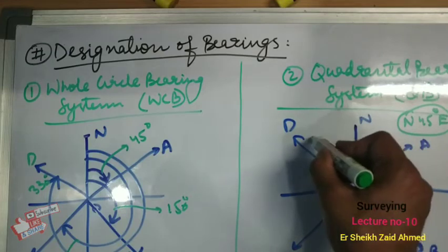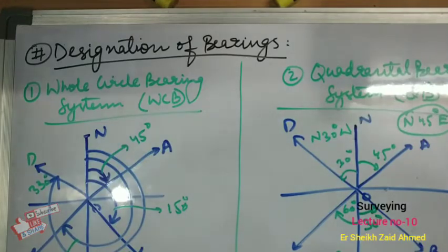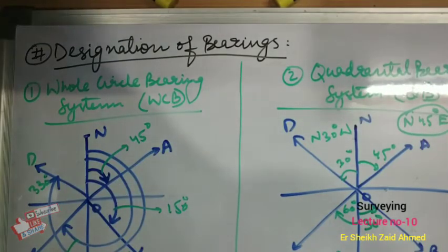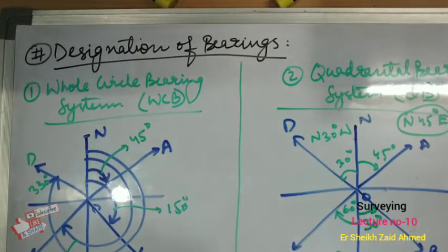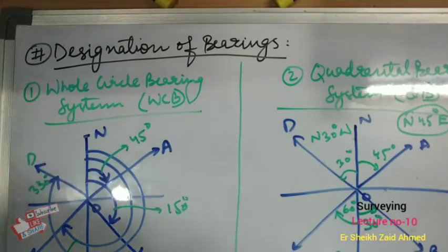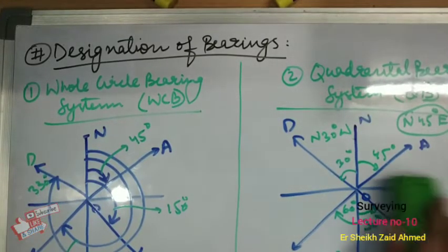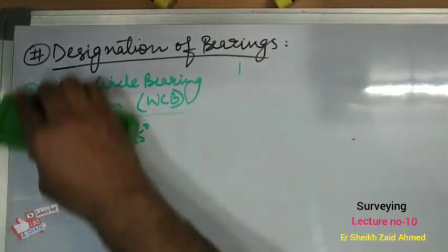So this is all about the designation of bearings using the Whole Circle Bearing system or the Quadrantal Bearing system. Now moving to the next topic: forebearing and backbearing. We will discuss what forebearing and backbearing are, one by one.